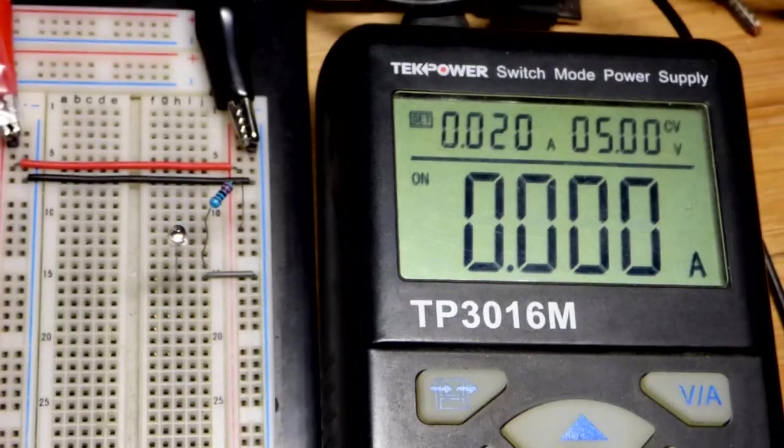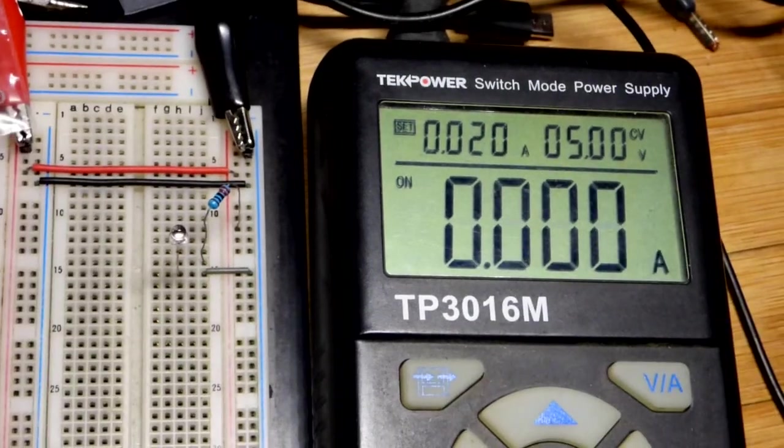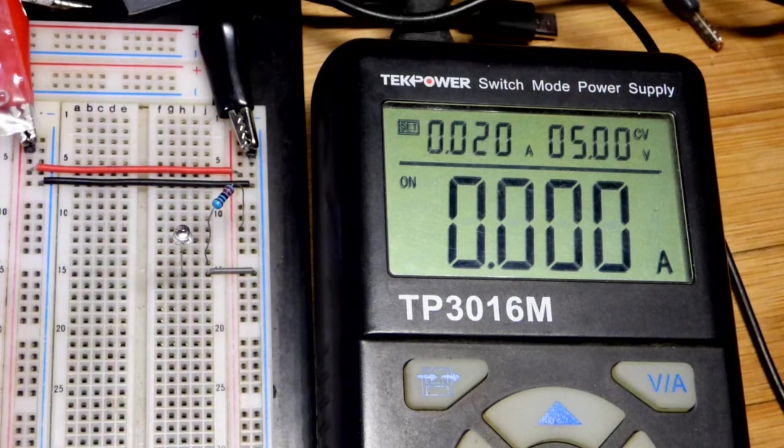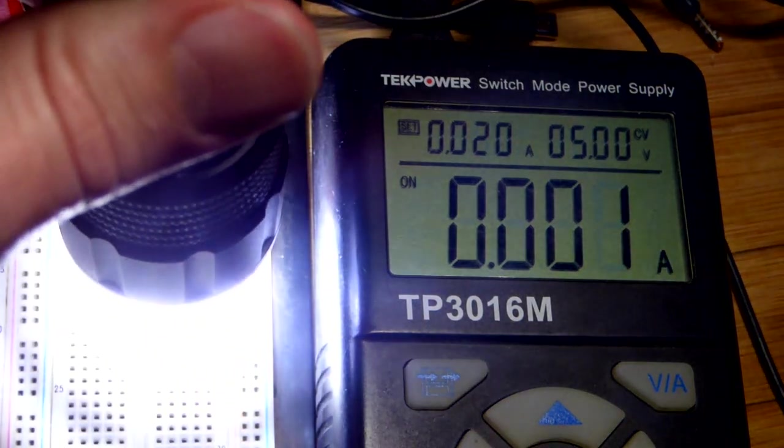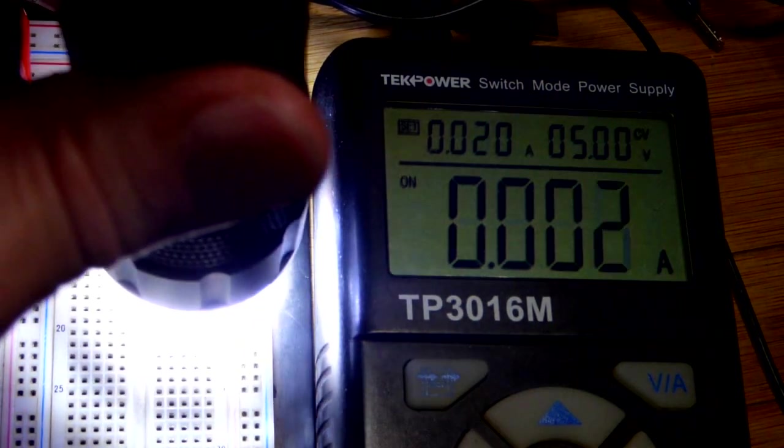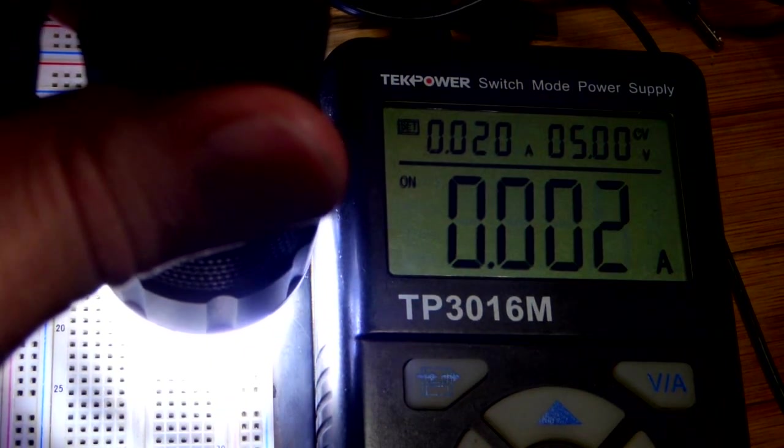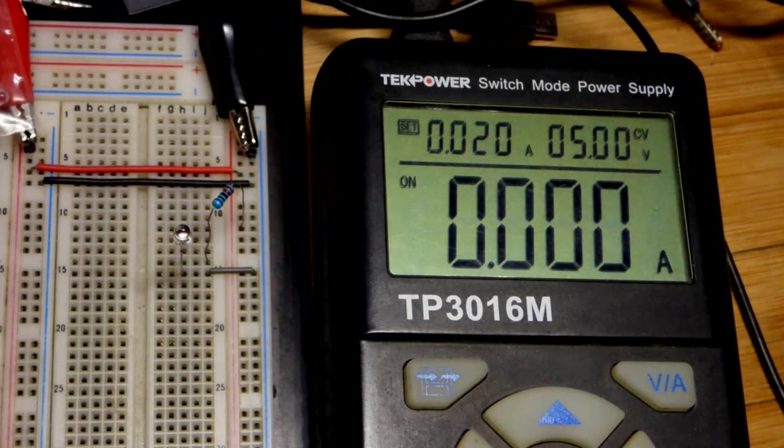But there you can see there's no current. So obviously that's not the case. You would see I believe over 20 milliamps of current if it really was just the resistor limiting the current. And there you can see I've been able to get up to 0.002 amps, the same as 2 milliamps.